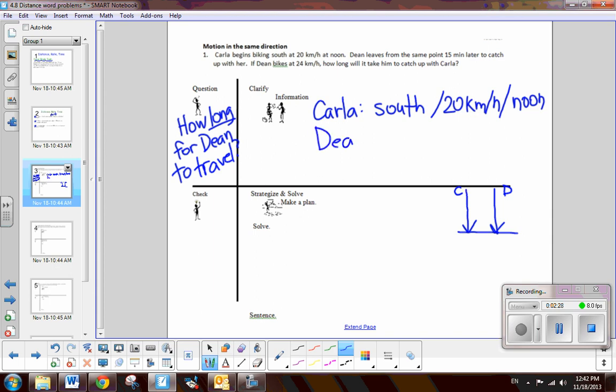Now, Dean, we're told that he's going the same direction. So, you can see this is a motion problem, where the two people are going the same direction. That's our type one. Now, Dean is traveling a little faster, and Dean leaves 15 minutes later. So, in other words, when he catches up, he will have been traveling 15 minutes shorter than Carla.